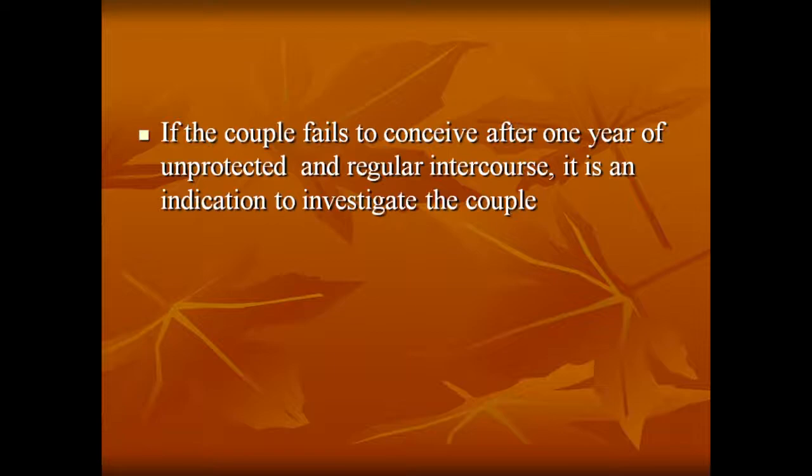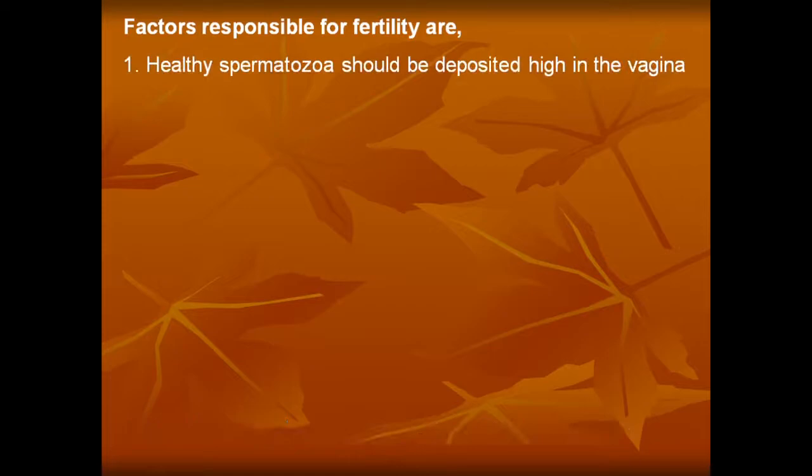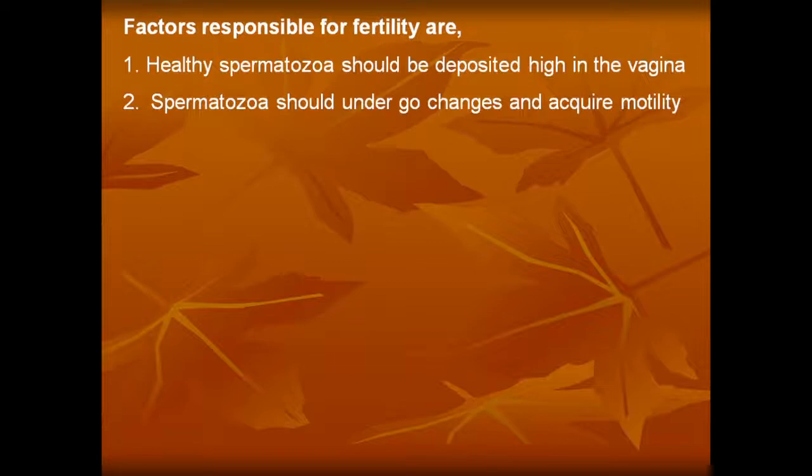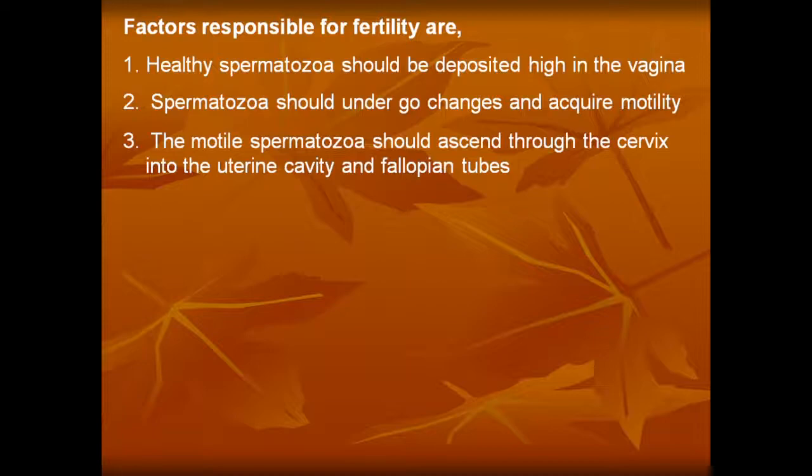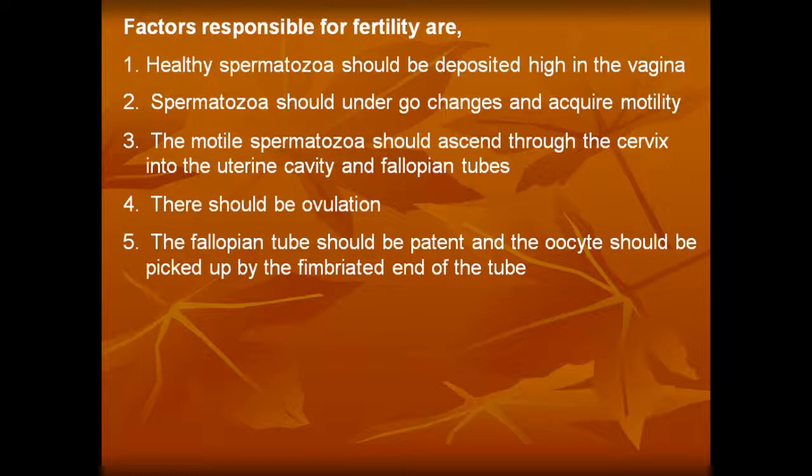If the couple fails to conceive after one year of unprotected and regular intercourse, it is an indication to investigate the couple. Factors responsible for fertility: healthy spermatozoa should be deposited high in the vagina; spermatozoa should undergo changes and acquire motility; the motile spermatozoa should ascend through the cervix into the uterine cavity and the fallopian tubes.